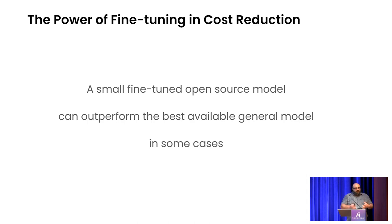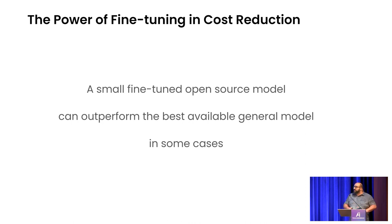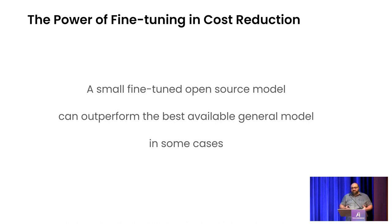Mechanism number one for saving money: consider open models. Consider models other than from the big companies as you move to production, because cost can be a huge issue. Merlin is a great example — it may not be cost effective if you use larger models.